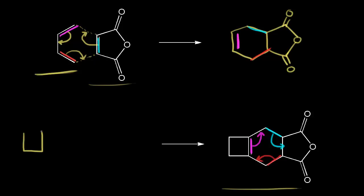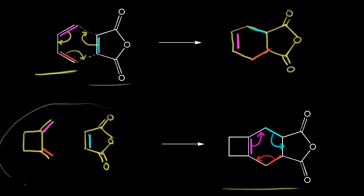On the left, our diene would have our double bonds looking like this. On the right for our dienophile, we draw the ring and put in the carbonyls. Following the electrons: magenta moved to here, blue moved to here, red moved to here. To check yourself on a problem like this, take the diene and dienophile you drew and verify they give you the product. Thinking about the Diels-Alder reaction in reverse gets you your starting materials.